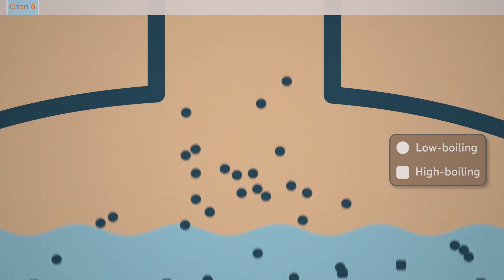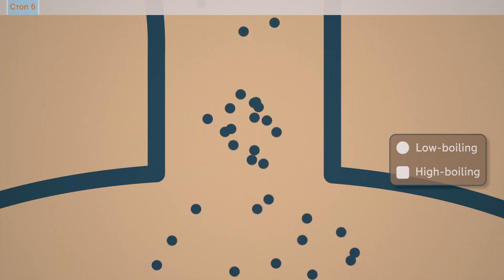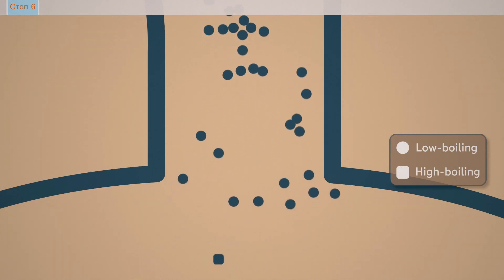After passing the trays, the resulting vapor exits the top of the tower with prevailing low boiling component. And the bottom part accumulates liquid with prevailing high boiling component.